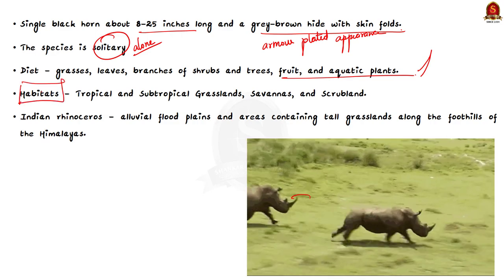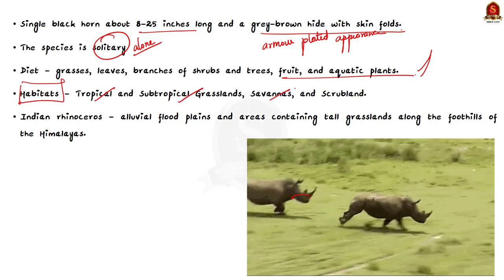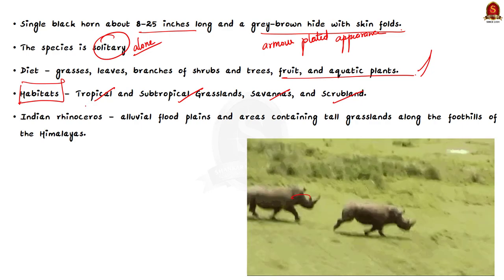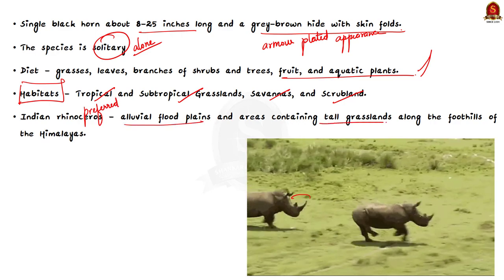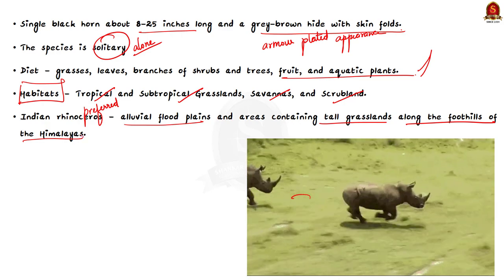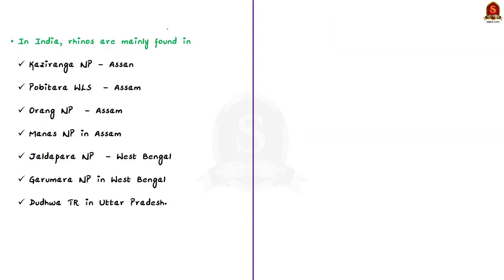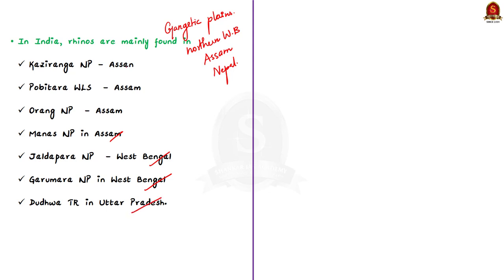The habitat of the greater one-horned rhino includes tropical and subtropical grasslands, savannas and scrubland. The preferred habitat is the alluvial flood plains and areas containing tall grasslands along the foothills of the Himalayas. Indian rhinoceros were extensively distributed in the Gangetic plains, but today the species is restricted to a small habitat in Indo-Nepal Terai, northern West Bengal and Assam. In India, rhinos are mainly found in Kaziranga National Park, Pobitara Wildlife Sanctuary, Orang National Park, Manas National Park in Assam, Jaldapara National Park, Garumara National Park in West Bengal, and Dudhwa Tiger Reserve in Uttar Pradesh.